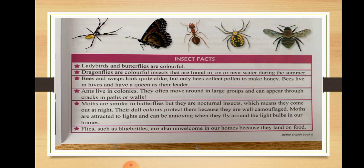Here are some interesting insect facts. Ladybirds and butterflies are colorful. Dragonflies are also very colorful insects found in, on, or near water during the summer. Bees and wasps look quite alike — they are similar in appearance — but only bees collect pollen to make honey.